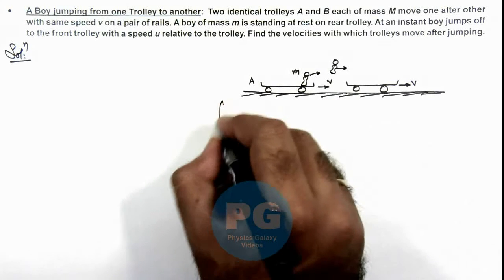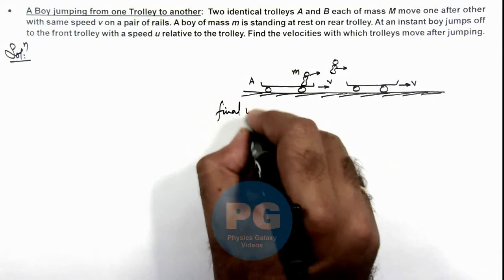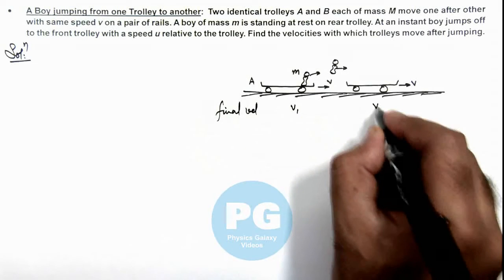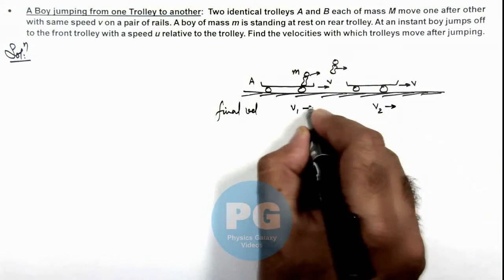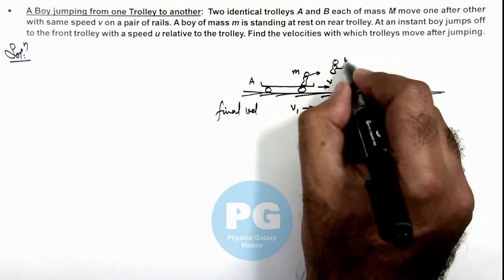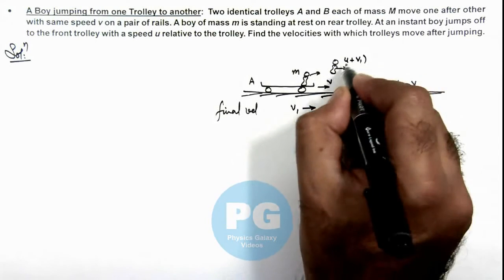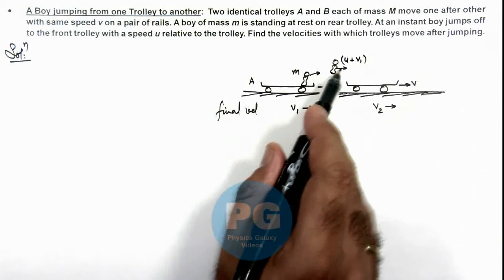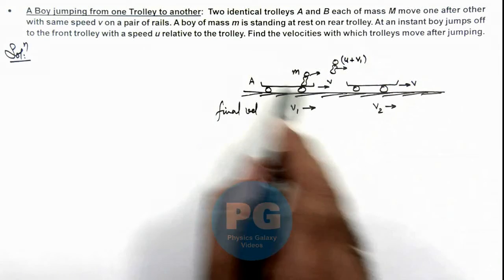If we say the final velocities of trolleys are v₁ and v₂ in the same direction, then when the boy jumps off, his velocity will be u plus v₁, because u is with respect to the trolley.